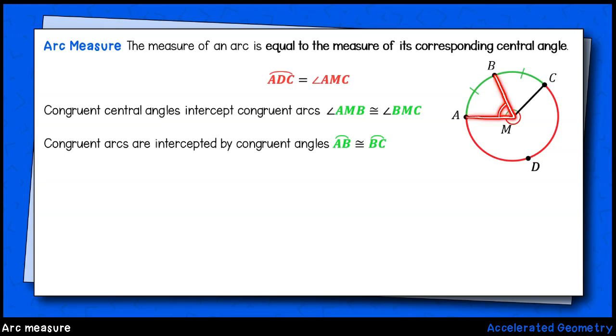In the case of a central angle, the concept is very simple. If an arc is intercepted by a central angle, the arc's measure is equal to the measure of the central angle. So, if angle AMB is 60 degrees, then arc AB is also 60 degrees.